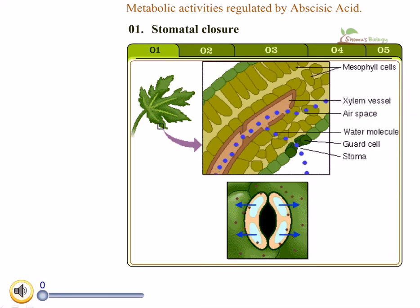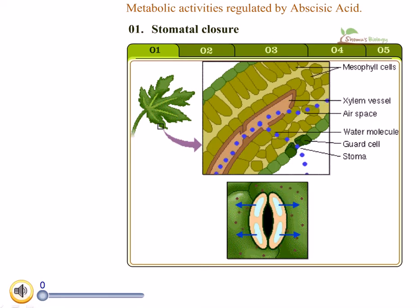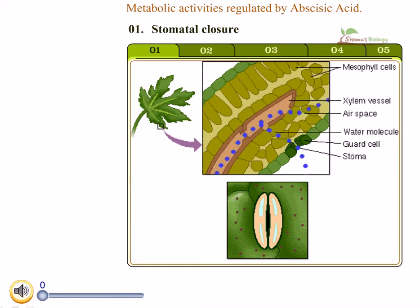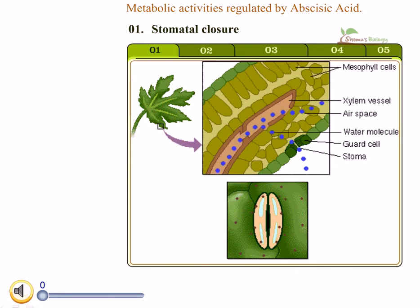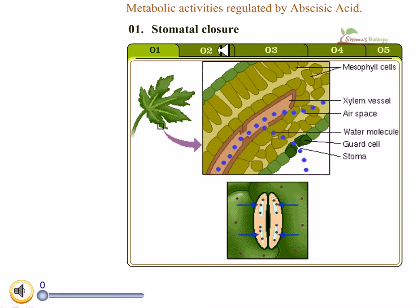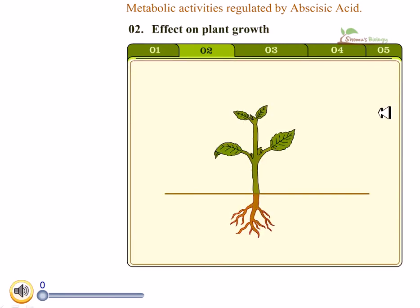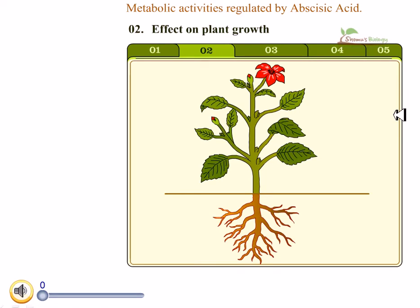The stomata then start closing. When the water potential of the cells increases, the chloroplast membrane becomes impermeable to abscisic acid. Since the abscisic acid supply stops, stomatal closure by guard cells will also stop.